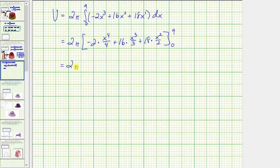Let's go ahead and simplify the antiderivative. So we have 2 pi times, this would be negative 1 half x to the fourth. Nothing simplifies here, but let's write this as plus 16 thirds x to the third, plus 18 divided by 2 is 9, so we have plus 9x squared.